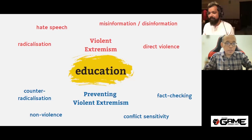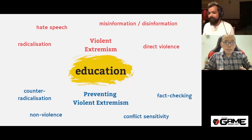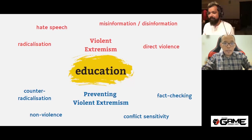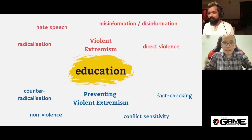Preventing violent extremism involves counter-radicalization, non-violence, conflict sensitivity, and fact-checking. The impact is clear: according to UN plans of action, violent extremism clearly undermines peace and security, human rights, and sustainable development. No country or region is immune from its impact. Interestingly, if we try to connect this with digital games, there are several examples. The first is a game called Ethnic Cleansing — a first-person shooter for Microsoft Windows created by American white supremacist organization the National Alliance, published in 2002. It used a neo-Nazi narrative including playing as a neo-Nazi skinhead, with the player assigned to kill African, Mexican, and Jewish characters, including Israeli Prime Minister Ariel Sharon.